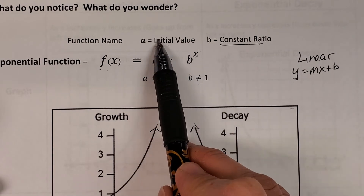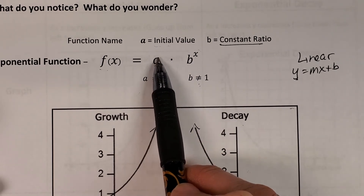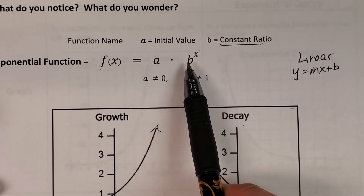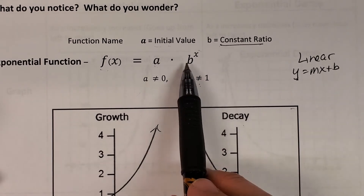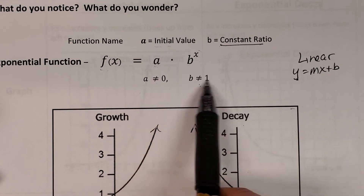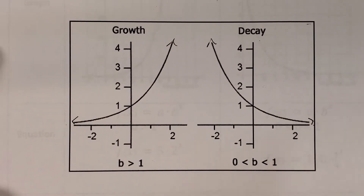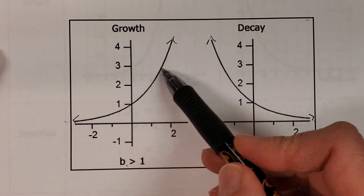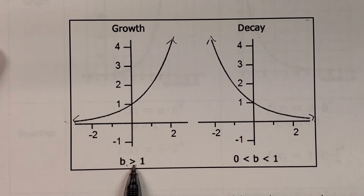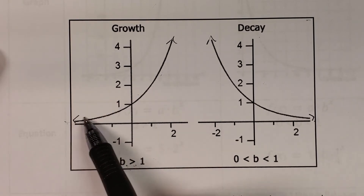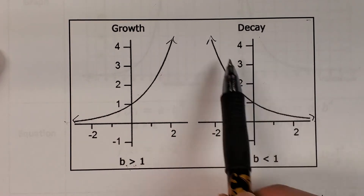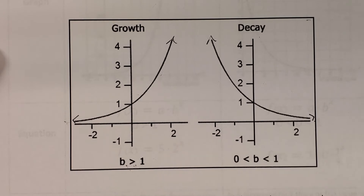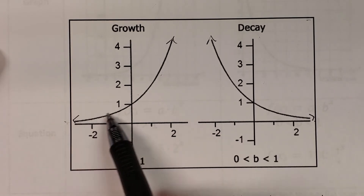There are two other numbers you'll see: a is the initial value or y-intercept, and b is the constant ratio — the number being multiplied over and over again. B can never be 1 and a can never be 0. If b is greater than 1, we have a growth model. You can look at a graph and tell whether it's growth or decay: going up from left to right is growth, going down is decay. You need to know all three ways — equation, graph, and table.